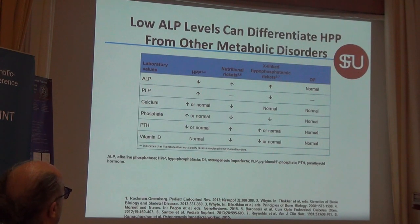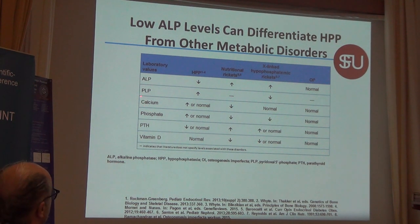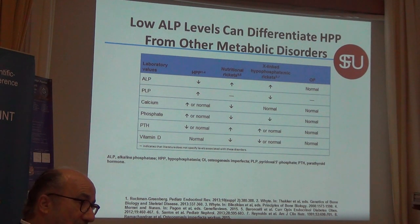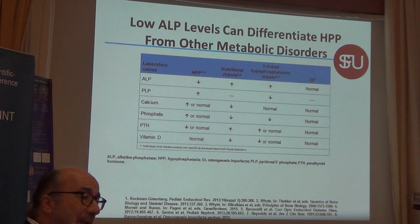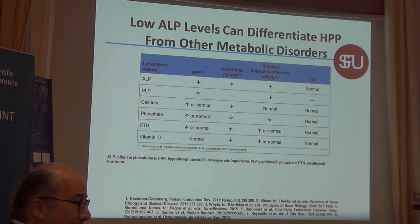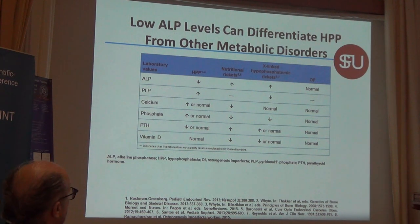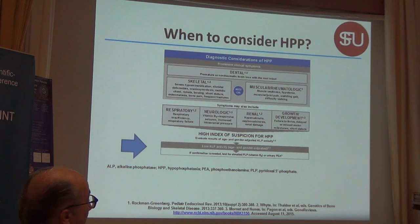If you look at the standard parameters in bone diseases — vitamin D, PTH, phosphate, calcium, pyridoxal phosphate, and PEA — there are many diseases with elevated alkaline phosphatase, but only one disease with low alkaline phosphatase, and that is hypophosphatasia. So in principle, it is very easy to detect.